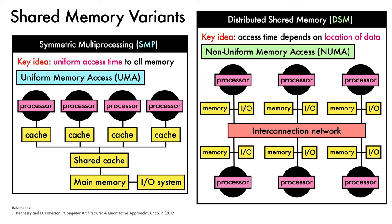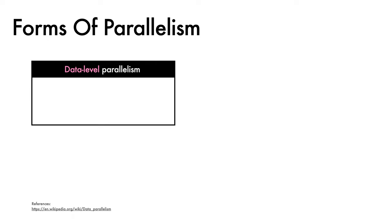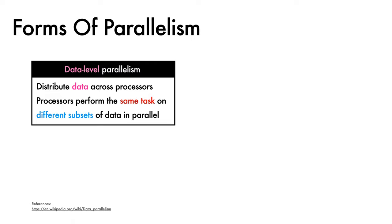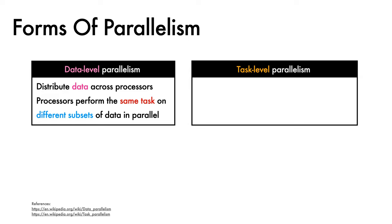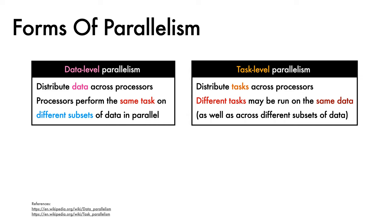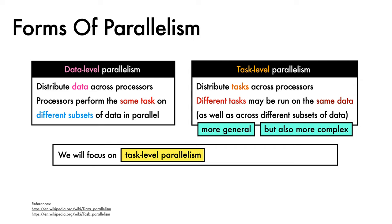How these systems are built in practice involves fascinating engineering challenges, many related to the difficulty of keeping data in different caches consistent — but we won't go down that rabbit hole here. We'll next turn to different parallel programming paradigms. One is data-level parallelism, where we distribute data across processes that perform the same task on different subsets of the data in parallel. A second is task-level parallelism, where we distribute tasks across processes — different tasks may run on the same data, as well as across different subsets. Task-level parallelism is more general but significantly more complex to implement.